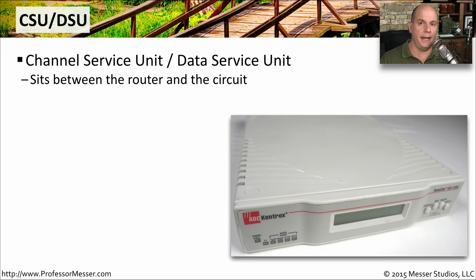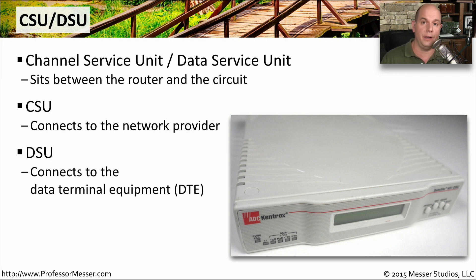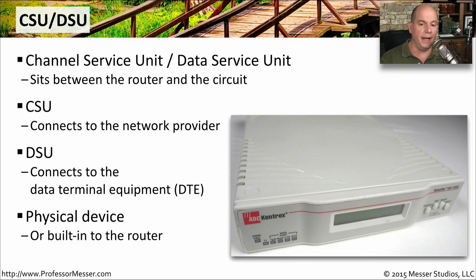The device that usually connects you to the WAN provider is the CSU/DSU, which stands for Channel Service Unit and Data Service Unit. The CSU/DSU connects to the network provider and then converts the provider's communication to something your router can understand on the inside using the DSU. This connects to the data terminal equipment, or DTE side, of the wide area network. It might be an external physical device similar to the one shown here, or it may be an adapter card integrated into the router you're using to connect to the WAN.